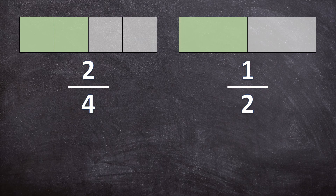So two out of four is equivalent — it is exactly the same as one out of two. So these two are equal. Now which one of these two fractions do you think is the more simple one, the simplified one? It is one over two. Both of them are equal to a half.